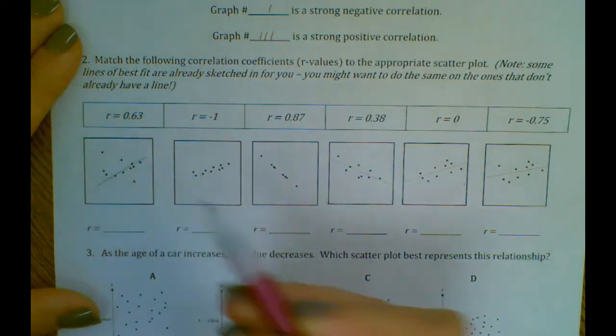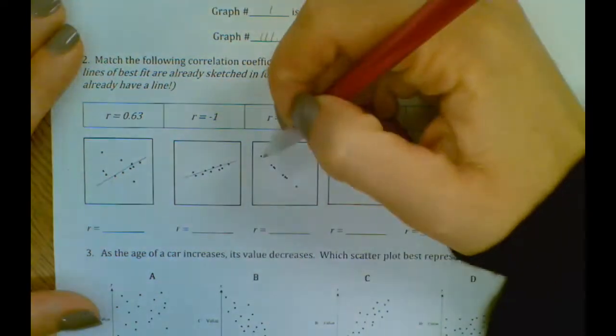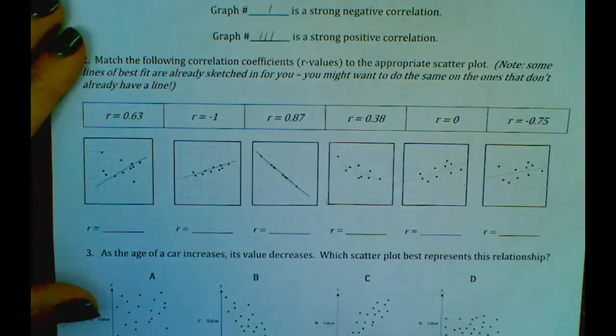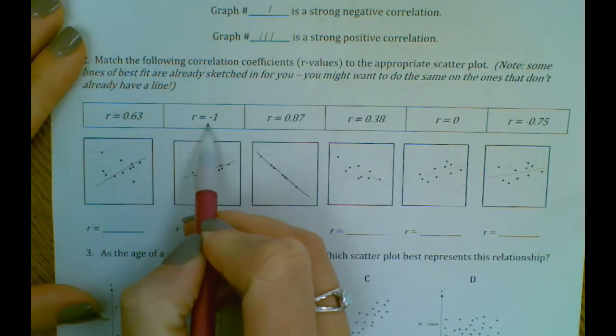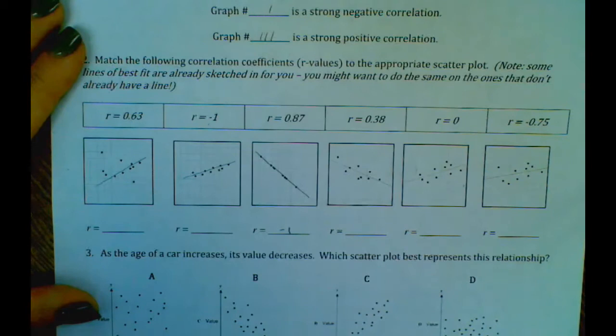Okay, so let's go ahead and start with the strongest. The strongest would be the r equals negative one. That is basically perfectly a straight line and it should be going down from left to right, and that should be right here, this graph right here, r equals negative one there.